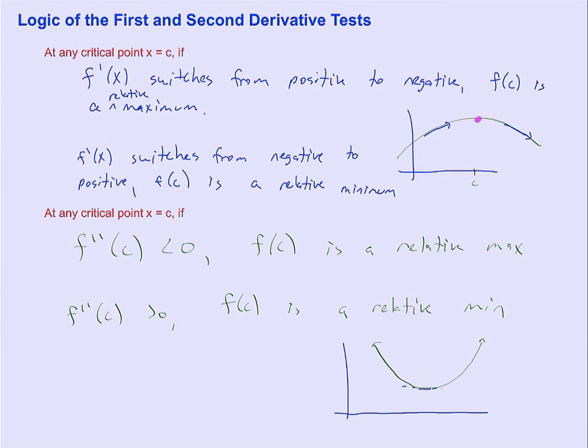we have that horizontal tangent here. The only way this could be a relative minimum is if the function at that point is concave up, and so that is how we can see that there's a relative minimum there.